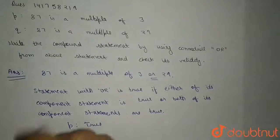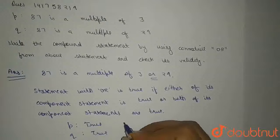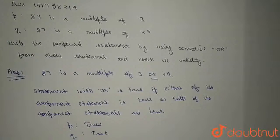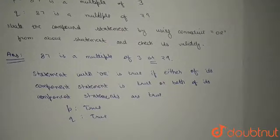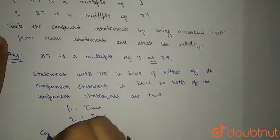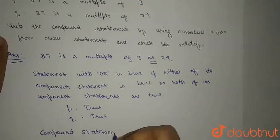Hence, P be true है, Q be true है क्योंकि 87 is a multiple of 3 and 87 is a multiple of 29, दोनों ही true हैं. Hence, in total, we can see that the compound statement, which is 87 is a multiple of 3 or 29, is true. Since, इसकी दोनों की दोनों component statements true हैं, तो both the compound statement is true. Thank you.